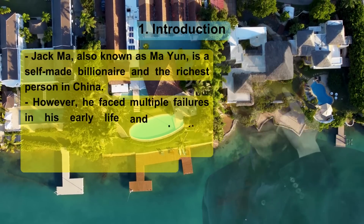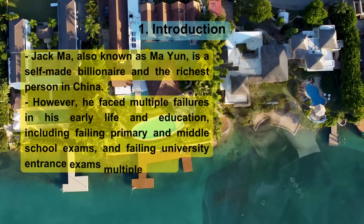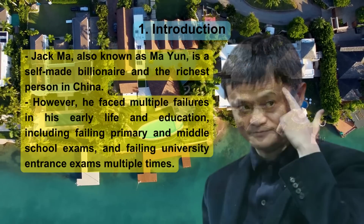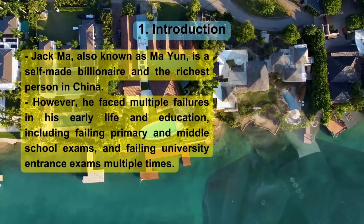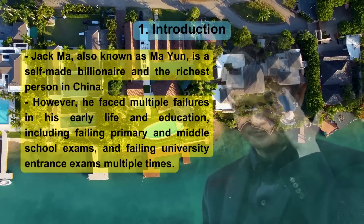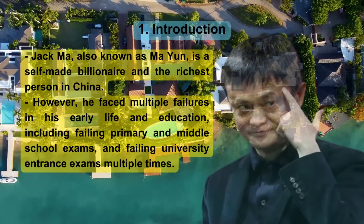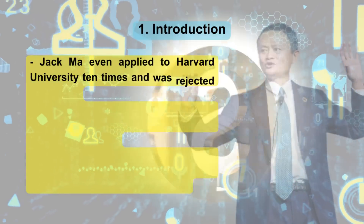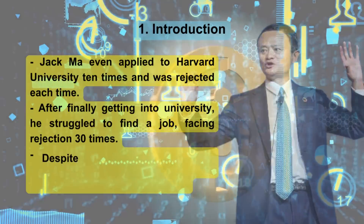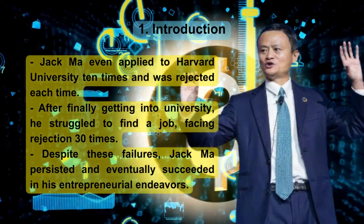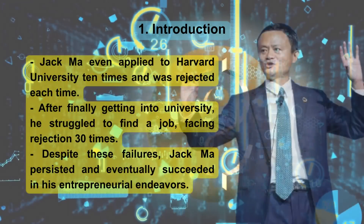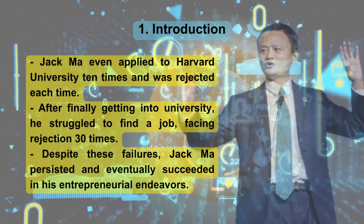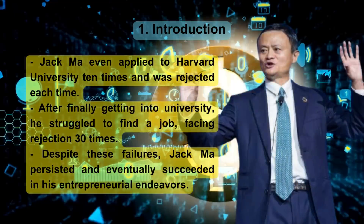Introduction. Jack Ma, also known as Ma Yoon, is a self-made billionaire and the richest person in China. However, he faced multiple failures in his early life and education, including failing primary and middle school exams, and failing university entrance exams multiple times. Jack Ma even applied to Harvard University 10 times and was rejected each time. After finally getting into university, he struggled to find a job, facing rejection 30 times. Despite these failures, Jack Ma persisted and eventually succeeded in his entrepreneurial endeavors.